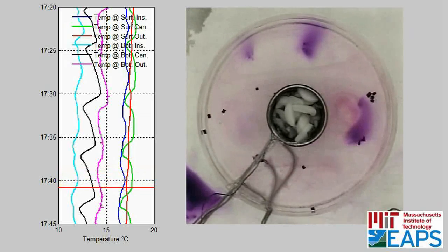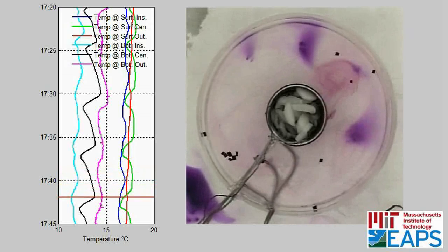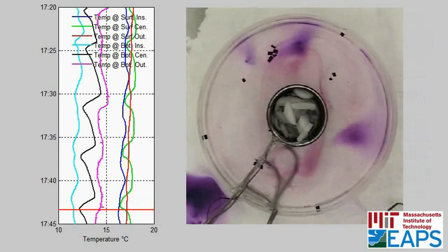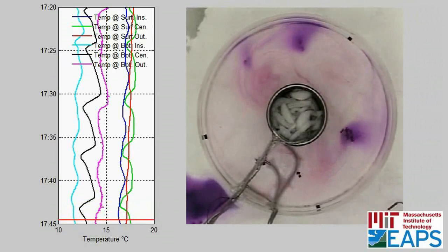Right now we see it hitting the sensors again, and you can see it getting much colder in all sensors. Now, as it exits the sensor area again, you can see it getting warmer.